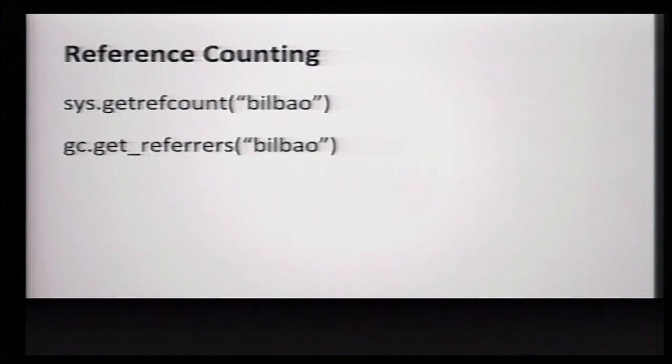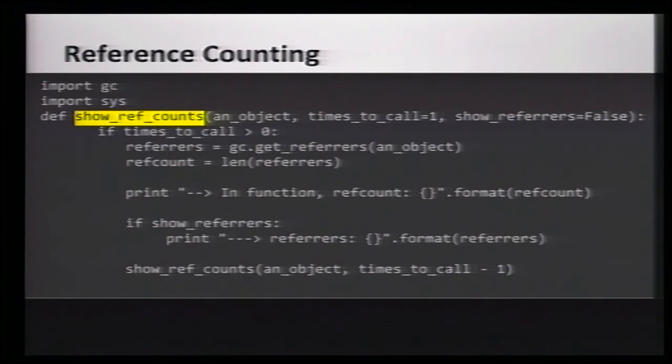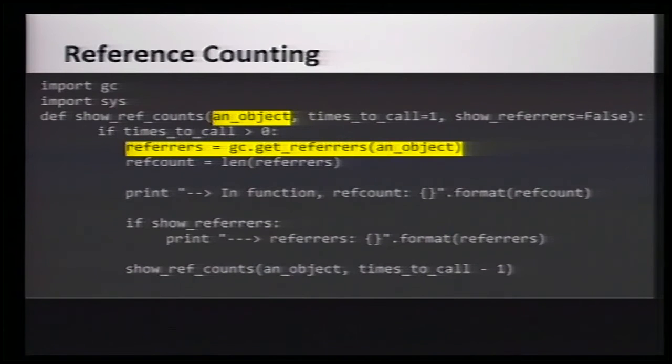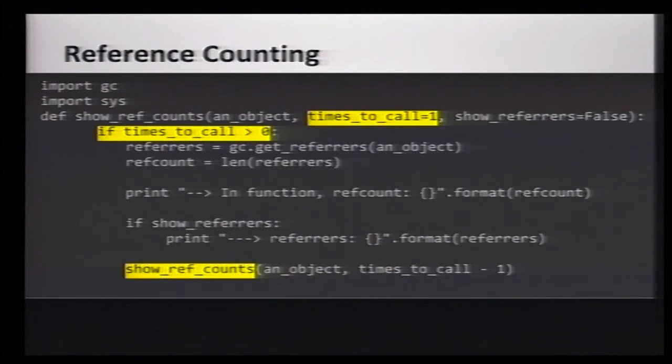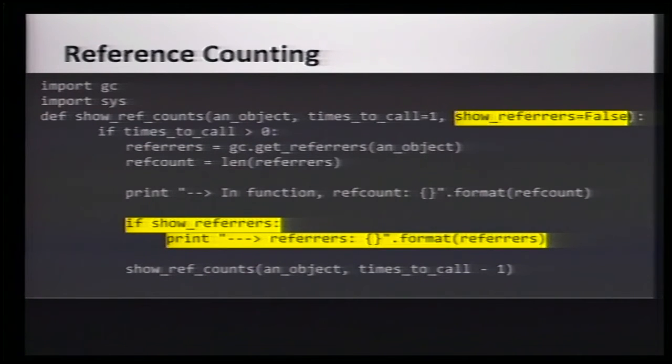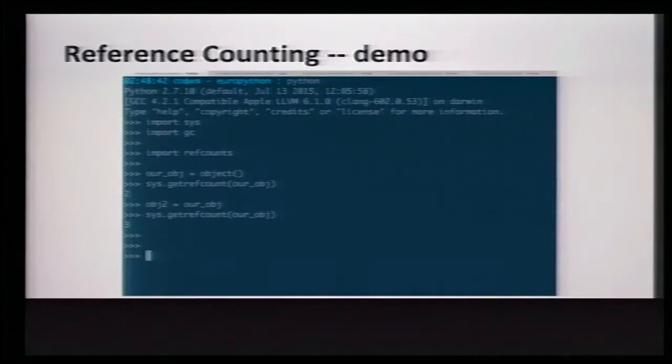So, here are two tools that can help us understand reference counts a little bit. From the sys module, we have the getrefcount function and from the gc garbage collection module, there's get refers, which returns a list of all things that currently own references to an object. So, here I've written a function, showrefcounts, and all it does is find the objects that own references to the argument named an object. It prints out how many there are and optionally, it can call itself a lot of times and it can optionally print out extra details about exactly which objects own references to an object.